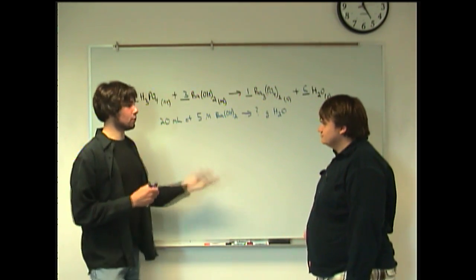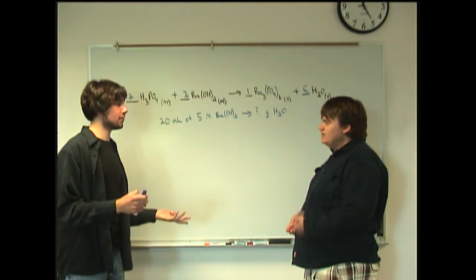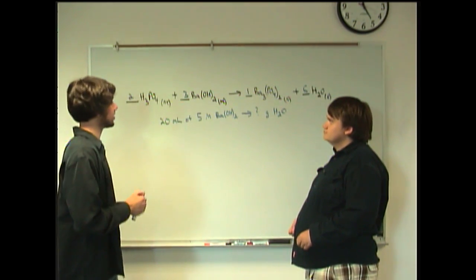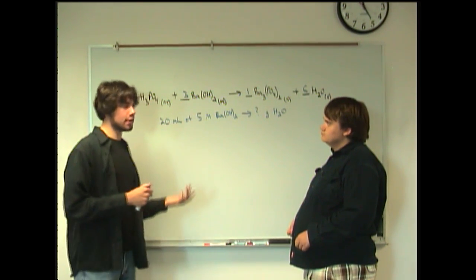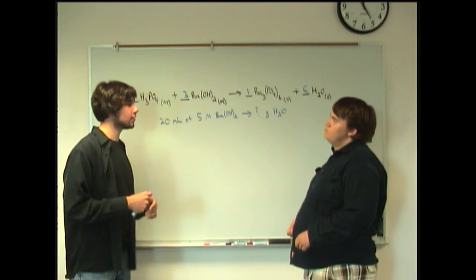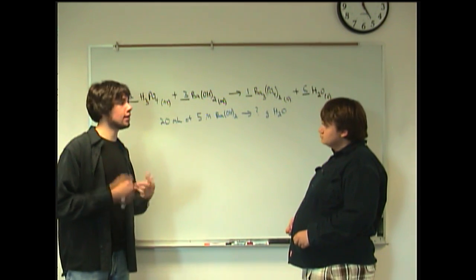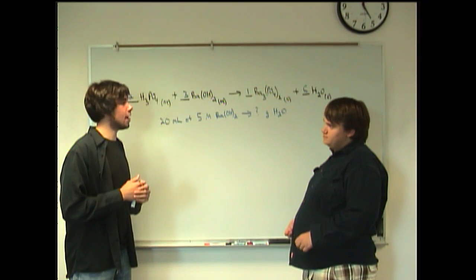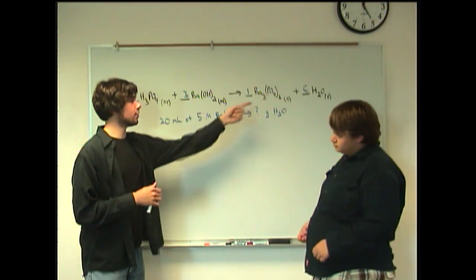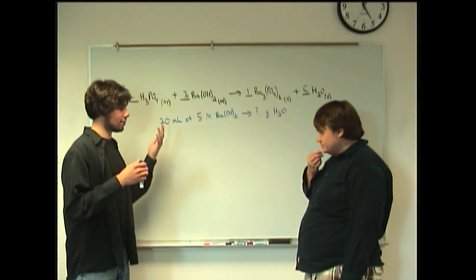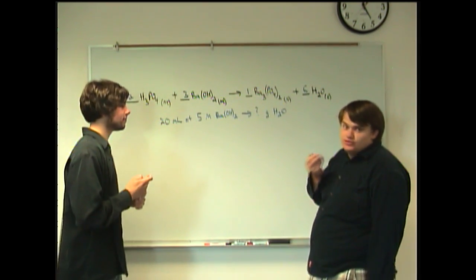Right. And molarity is the concentration of stuff. Yes. Right? I remember that. So if we have barium hydroxide and we have a specific concentration of it, we'll say 5 molar, we'll say that we take 20 milliliters of 5 molar barium hydroxide as our reactant. Okay. And we're curious to know how many grams of water we're going to get as a product. Alright. Sound doable? Well, we can try.